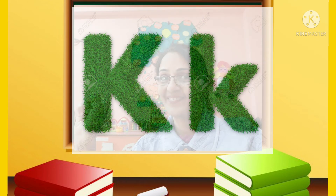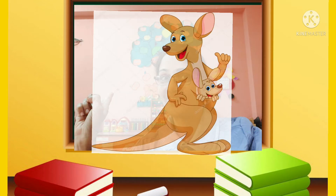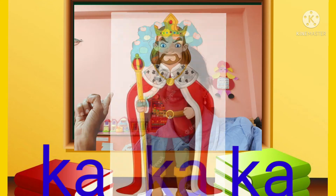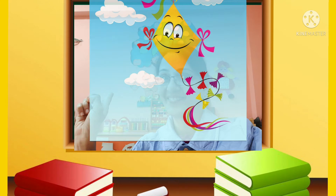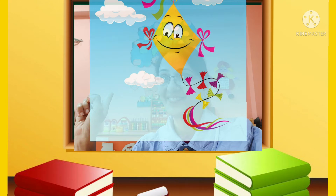Children, this is letter K. K is for kangaroo. K, K, kangaroo. K is for king. K, K, king. K is for kite. K, K, kite.